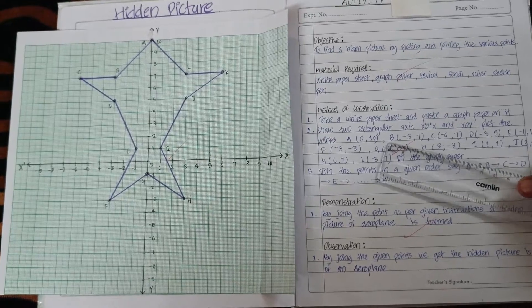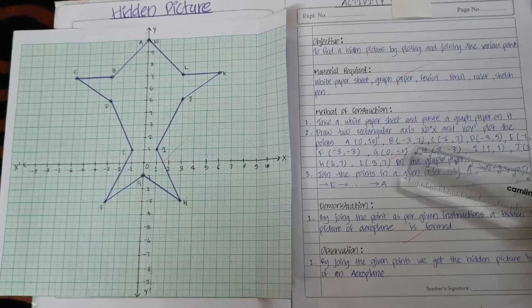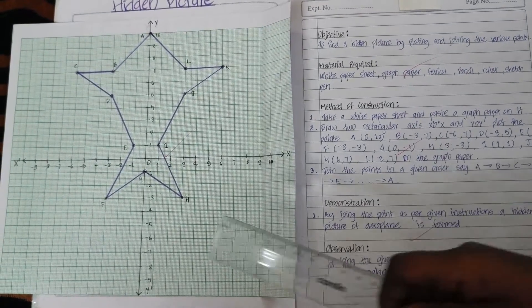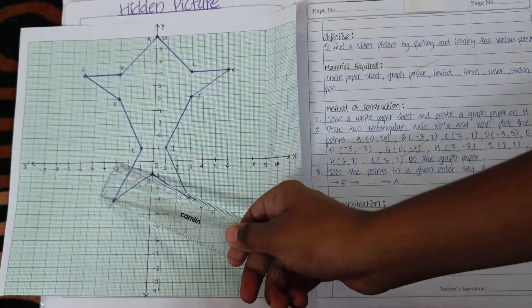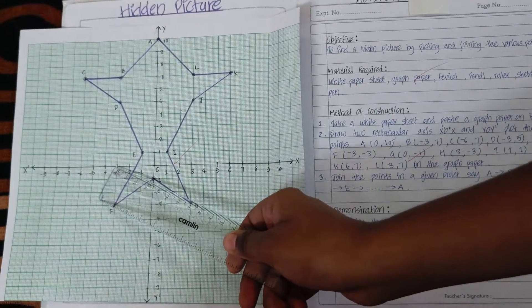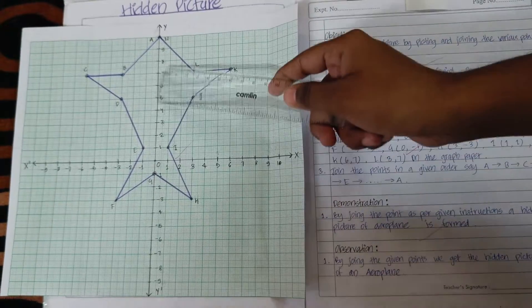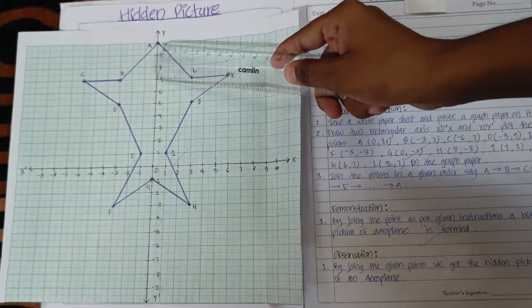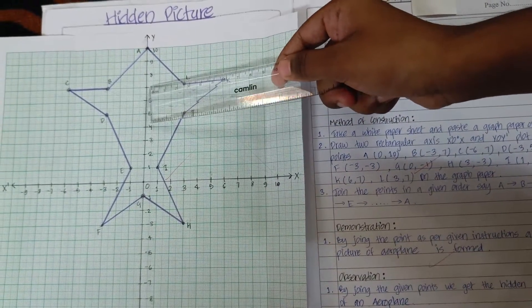Next, we will locate the point B which has (-3,7) coordinates. So from the x-axis we will take -3 in negative direction and from the y-axis we will take 7 in positive direction. Hence, we have this point B at (-3,7).